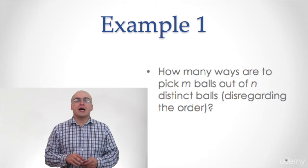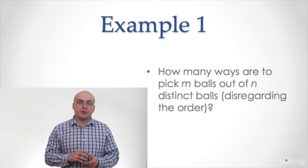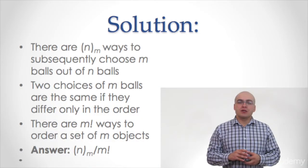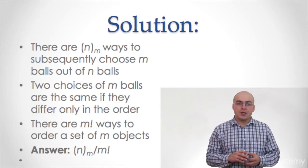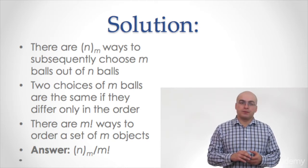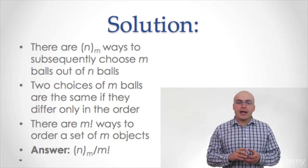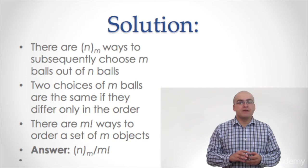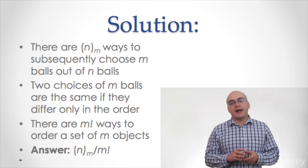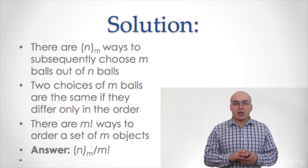Now let us move to the general problem. Problem 2: How many ways are there to pick m balls out of n colored balls if we disregard the order of the picked balls? Solution: There are n_m ways to subsequently choose m balls out of n balls — n choices for the first ball, n−1 choices for the second ball, and so on. On the other hand, two choices of m balls are the same if they differ only in order. There are m factorial ways to order a set of m objects. Thus, there are n_m divided by m factorial ways to choose m balls out of n balls.